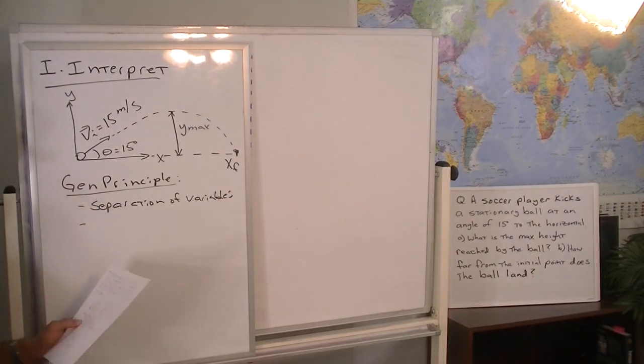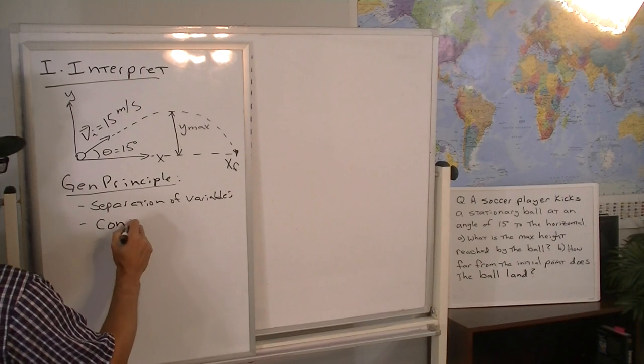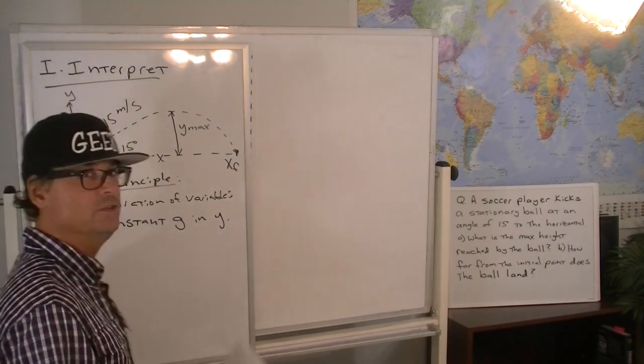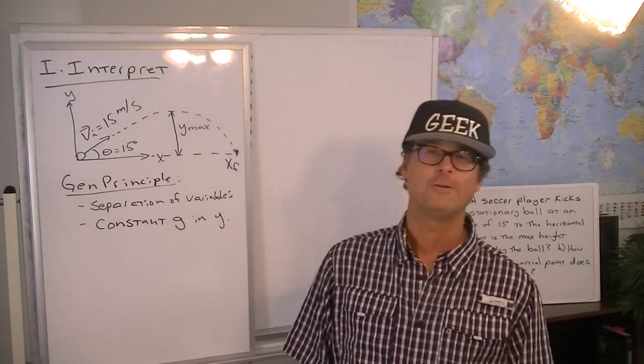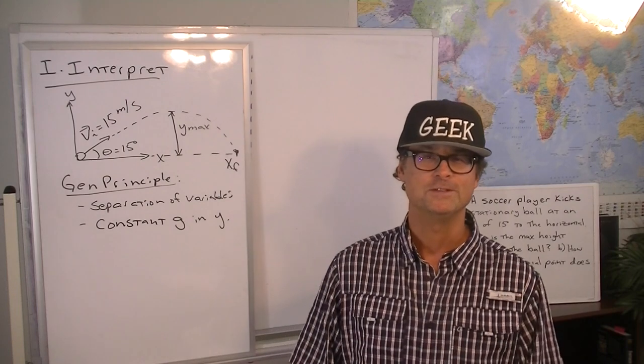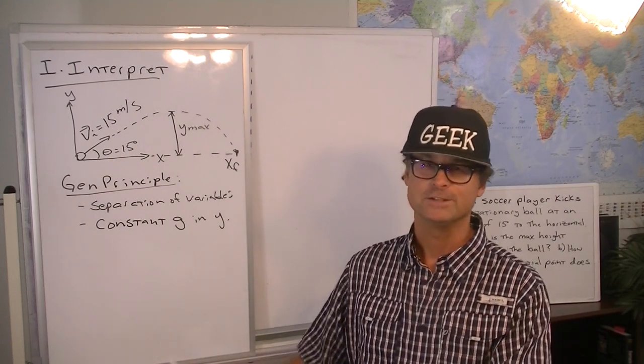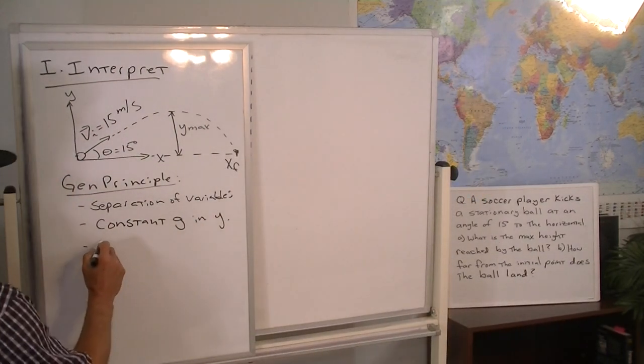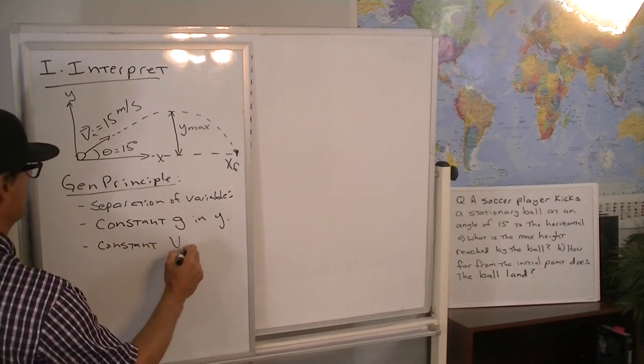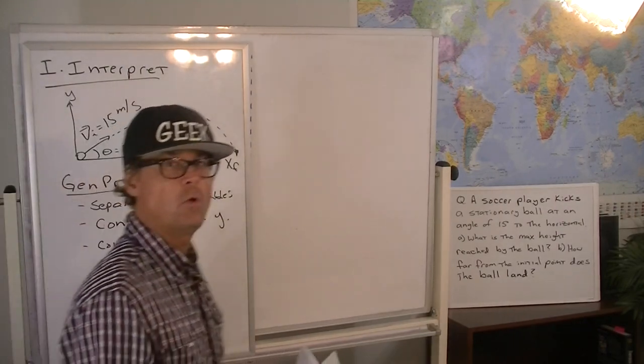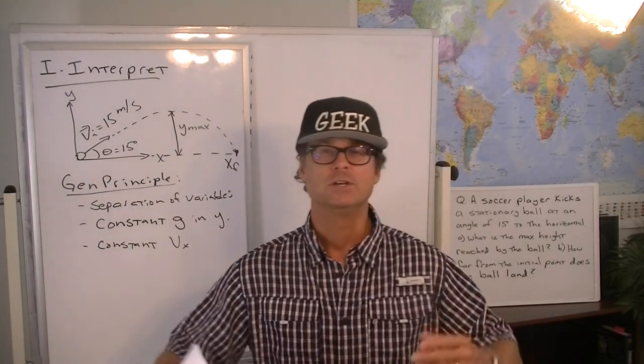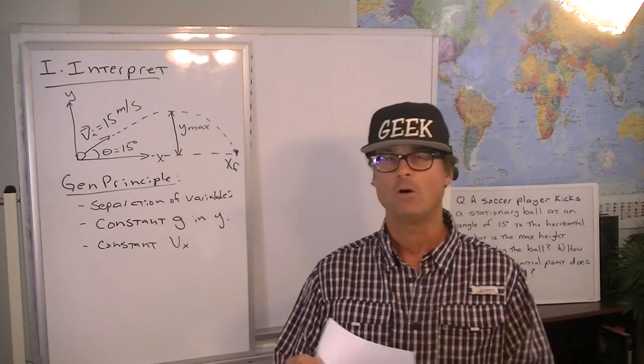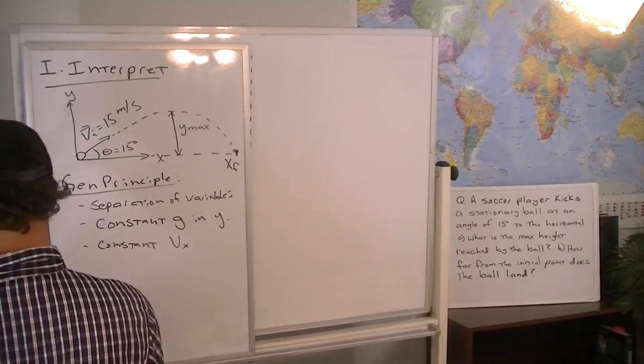A couple of other general principles here that are important is that you have the constant G in the Y motion, right? And this is the principle that Galileo discovered relative to free fall, that in the absence of air resistance near the surface of the earth, all objects accelerate downward at the 9.8 meters per second squared. And then we have the constant X component of velocity in the horizontal motion. And this is the idea that because there aren't any forces acting, no forces are acting in the horizontal direction, that the horizontal velocity is constant.